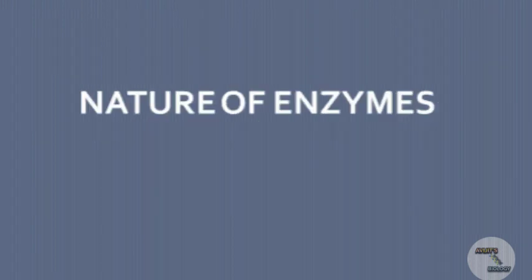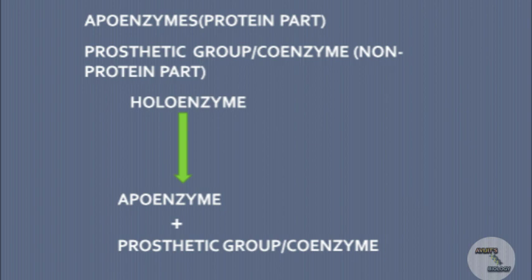The majority of enzymes are proteins. Some of them are simple proteins having no non-protein part; others are conjugated proteins. They consist of a protein part called the apoenzyme and a non-protein part called the prosthetic group or coenzyme. Holoenzymes are the active forms of enzymes. Holoenzymes represent the apoenzyme bound to its necessary coenzymes or prosthetic groups.